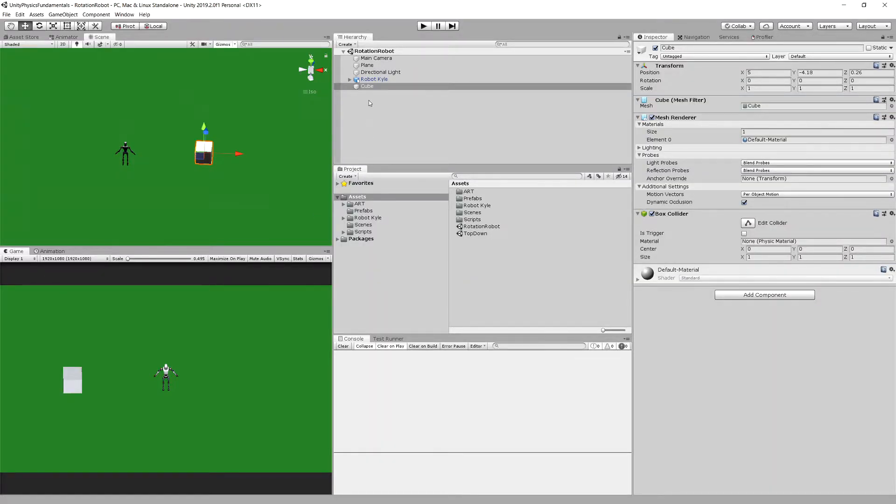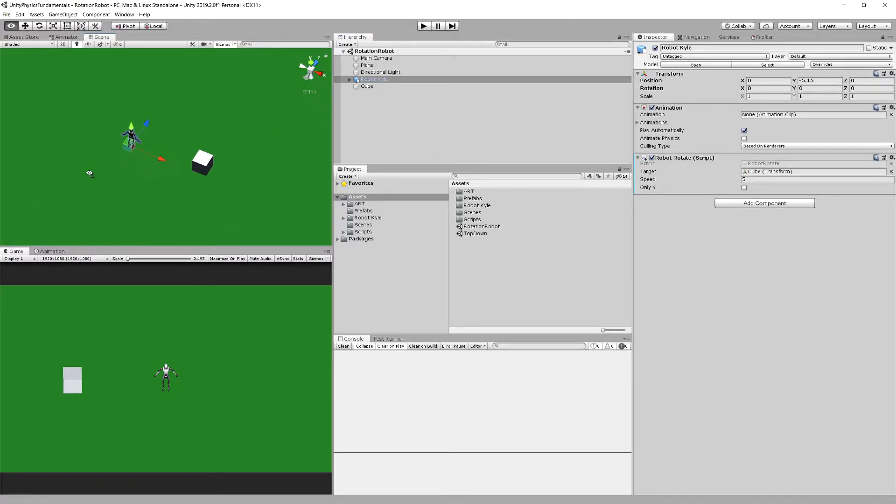Well, let's look at the example. In this example, we have a cube that will be followed by a robot. A robot is pointing in the z direction and the y-axis is the rotation axis of the robot. And it has a script that takes target, a speed of rotation and a bool flag only y. Let's play.